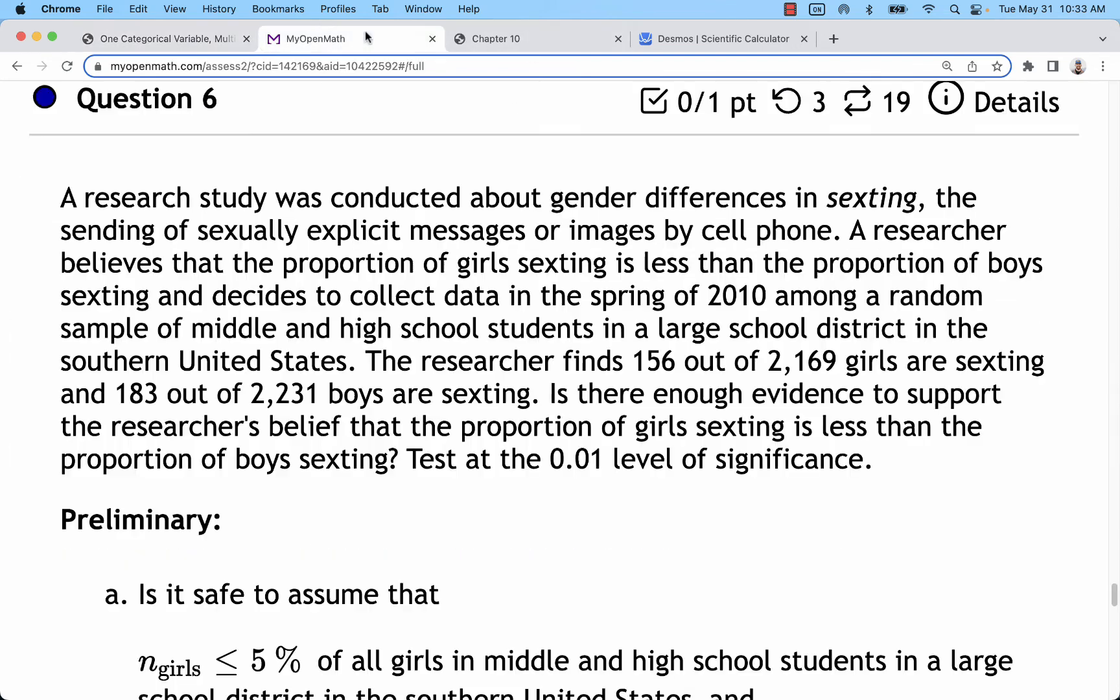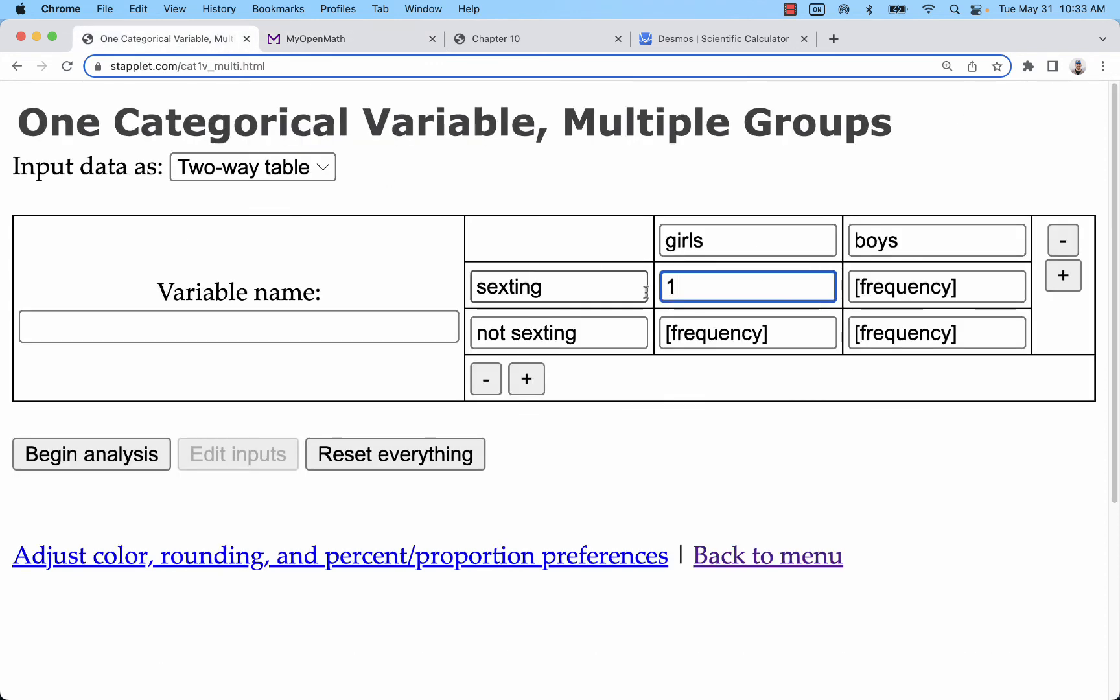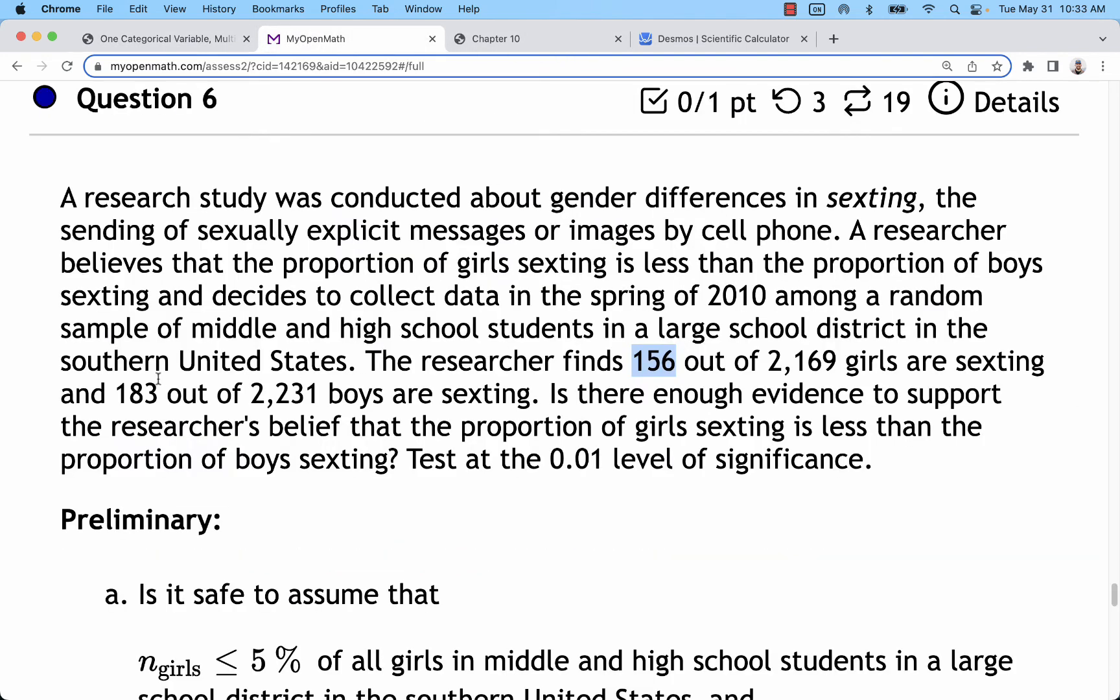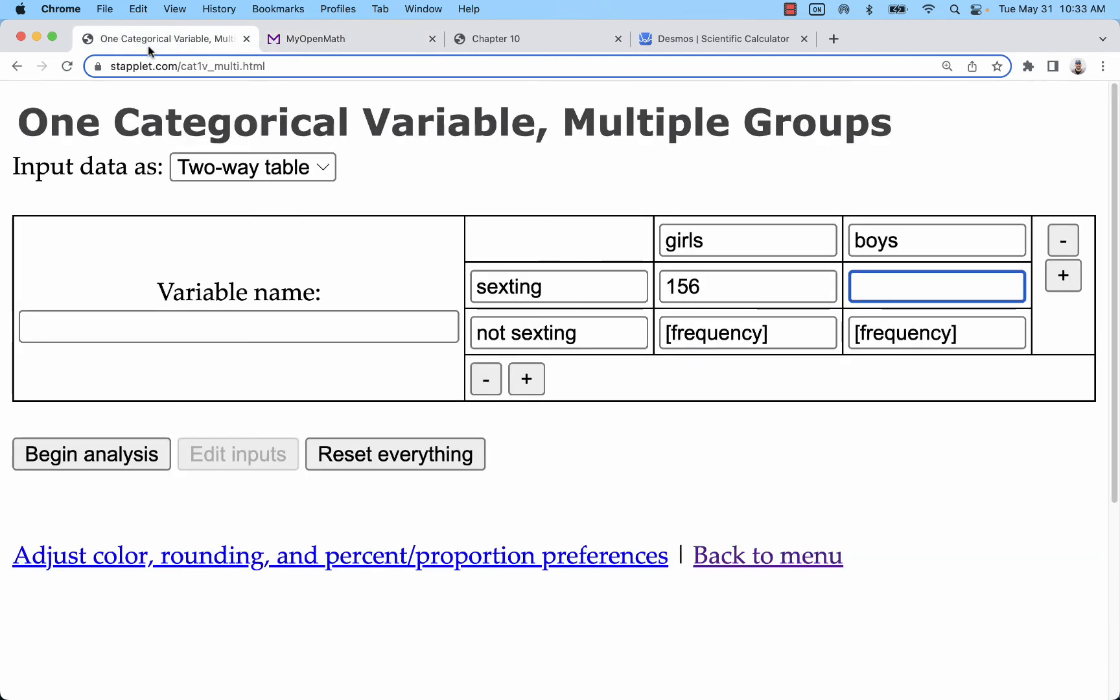We need to break this down. We're going to start with number of girls in this sample who are sexting. That's 156 out of 2,169. So I'll start with 156, and the number of boys is 183.